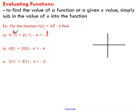If we sub in negative one we get negative six, sub in zero we get negative four, and sub in one we get negative two. No surprises — it is a linear function. And that's kind of just how you can use function notation to evaluate functions and get an idea of what these graphs look like.